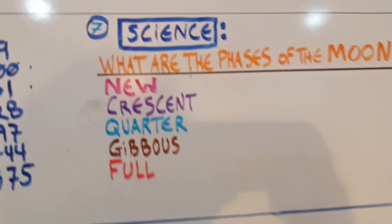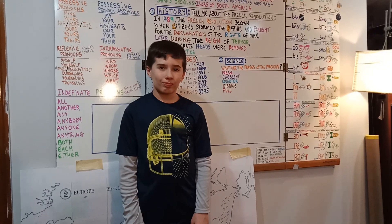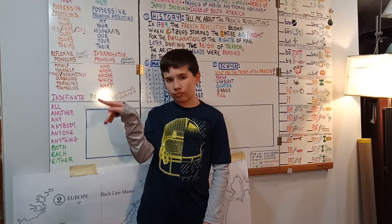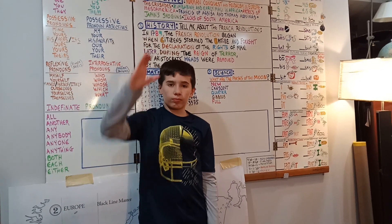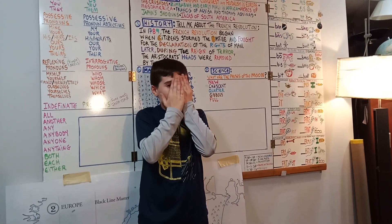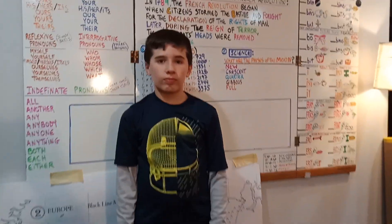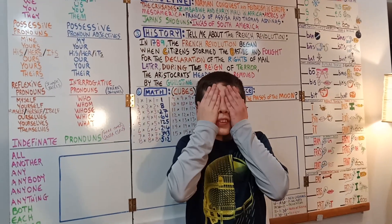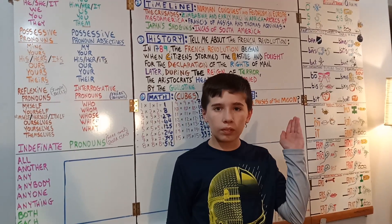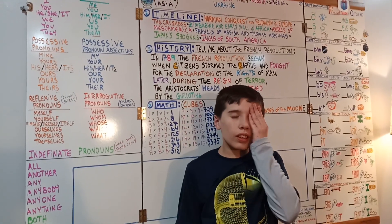And for science, we're going to do: what are the phases of the moon? It's new, crescent, quarter, gibbous, full. We'll make a P for phases and a C for the moon. We'll use the song 'Bad Moon Rising' by Creedence Clearwater Revival. What are the phases of the moon? New crescent, quarter, gibbous, full. These are the phases of the moon. New crescent, quarter, gibbous, full.